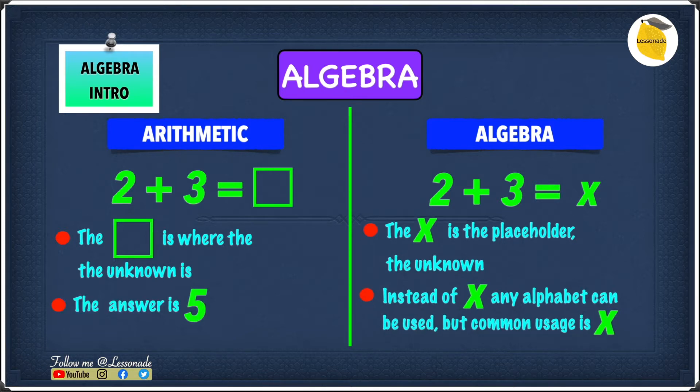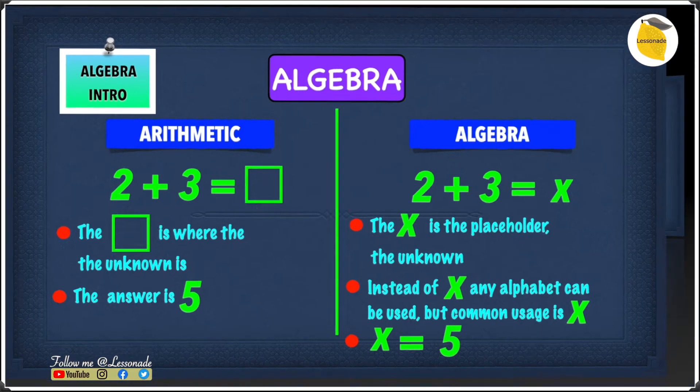So we know that 2 plus 3 in arithmetic will be 5. The answer is obviously 5 in arithmetic. The answer in algebra will also be 5 but you don't write it just as 5. You write it as x equals 5, because in the question it says 2 plus 3 equals x. So whatever you find as the answer is basically x, and 2 plus 3 will be 5, and 5 is x, so you write it as x equals 5.